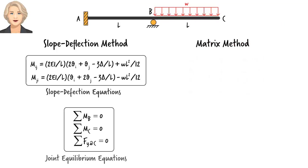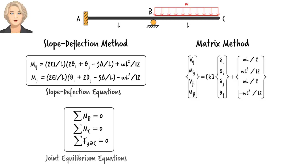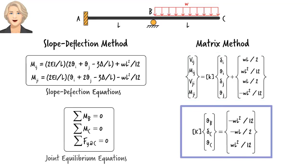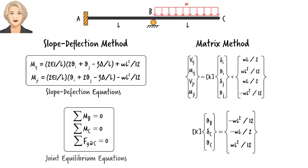First, we write an expanded version of the slope-deflection equations for each structural member in matrix form. Then, we combine the member matrices to form the joint equilibrium equations, also in matrix form. The solution for this system of linear equations is the set of unknown slopes and deflections at the joints of the structure, which can then be used to compute member end forces. Please keep the parallels between the slope-deflection method and the matrix method in mind as we go through the formulation.